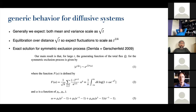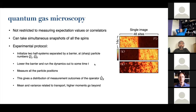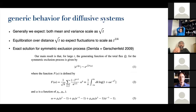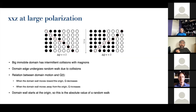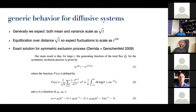The low moments of this distribution — the mean and variance — are related to transport, but the higher moments go beyond just knowing the transport. If you take the normal diffusive case like the symmetric exclusion process, all the cumulants of the charge transfer distribution scale the same way with time — as square root of t — and you can write down a generating function for all cumulants, which has the form square root of t times lambda times some other stuff.